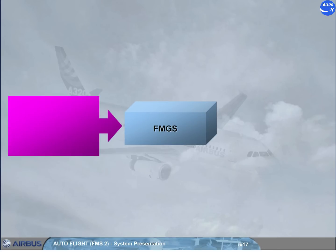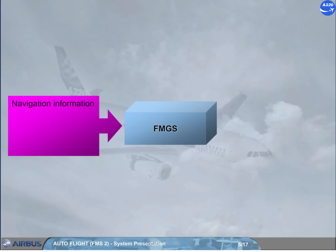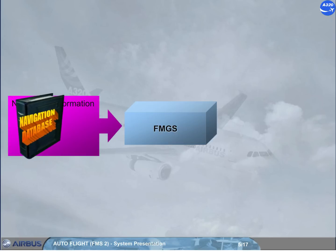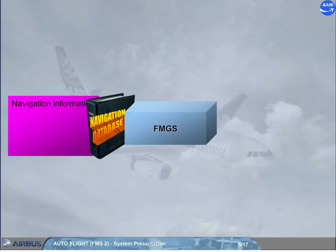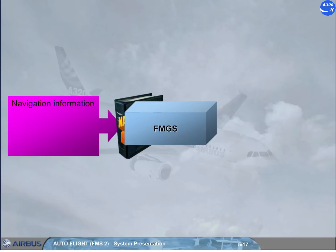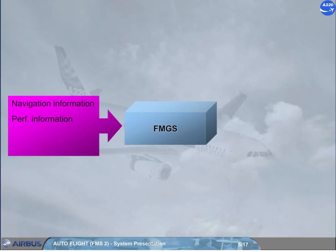The FMGS receives navigation information, which contains details of airfields, nav aids, airways, routes, waypoints, procedures, SIDs, STARs, approaches, missed approaches, etc. Aircraft performance information, the Air Data and Inertial Reference System (ADIRS), and the Global Positioning System, GPS, for position and dynamic information. You will learn about them in the navigation chapter.